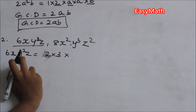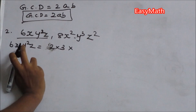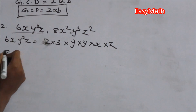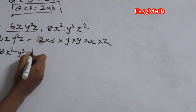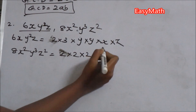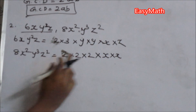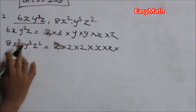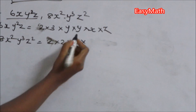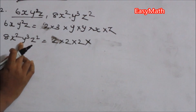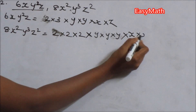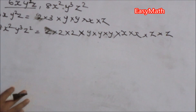The power value of y is 2, so y × y. Now expanding 8x²y³z²: 8 is 2 × 2 × 2, then x × x since the power of x is 2, and the power of y is 3 so we expand it as y × y × y, then x and z.